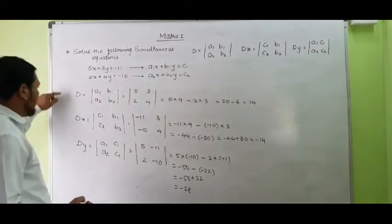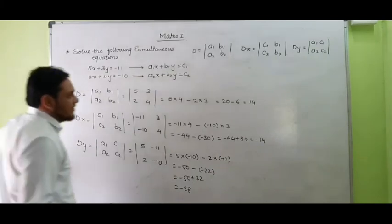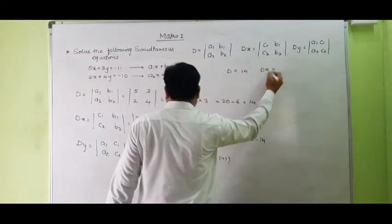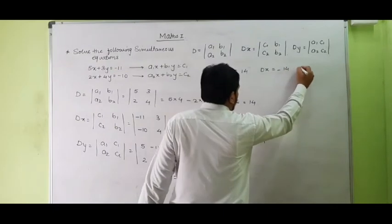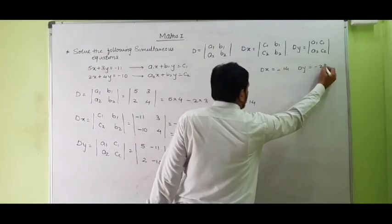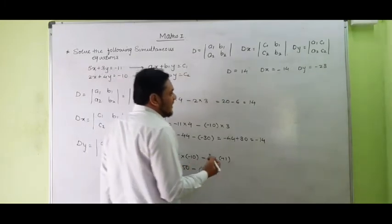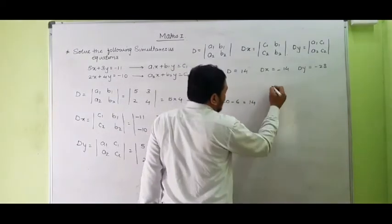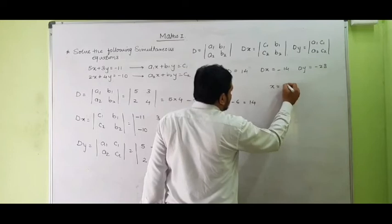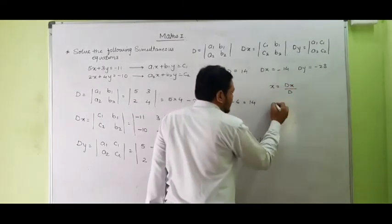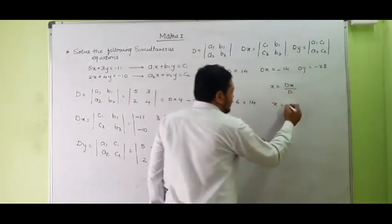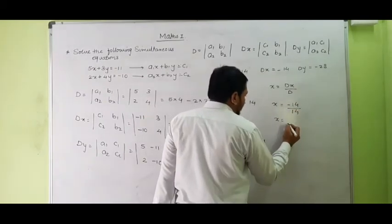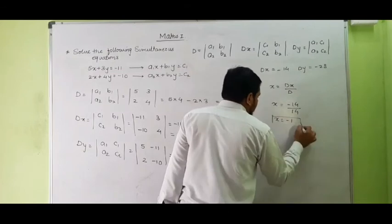So students, we have found D equal to 14, DX equal to minus 14, and DY equal to minus 28. Now to find X, we use X equal to DX upon D, as seen in the previous lecture. So X equals negative 14 upon 14, and the 14s cancel, giving X equal to negative 1.